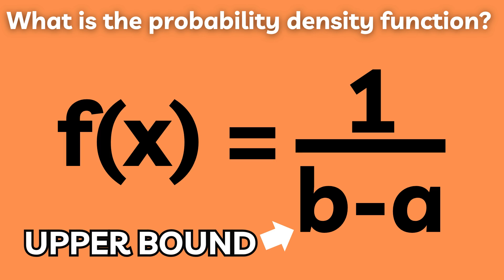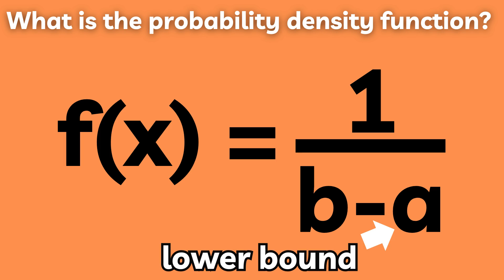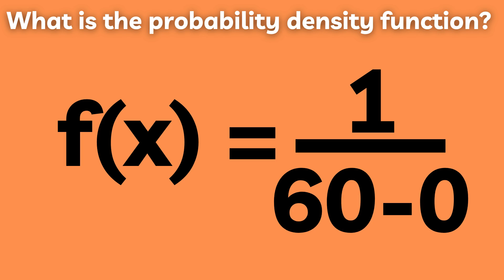or the maximum amount of time we must wait, and a is the lower bound, or the minimum amount of time we can wait for the bus. This means that the probability density function can be written as 1/(60-0).